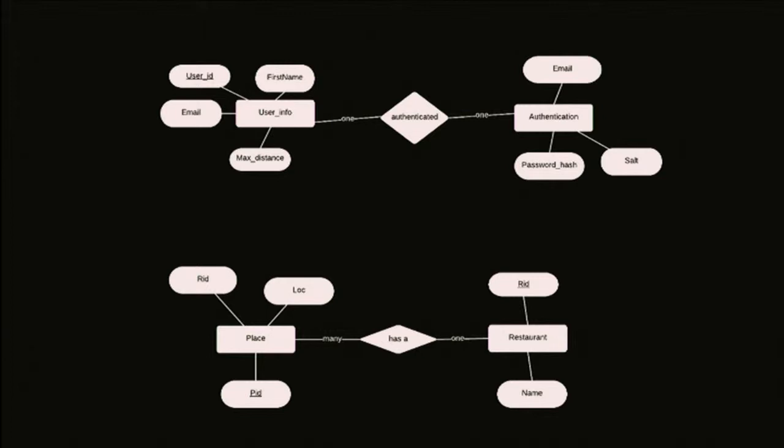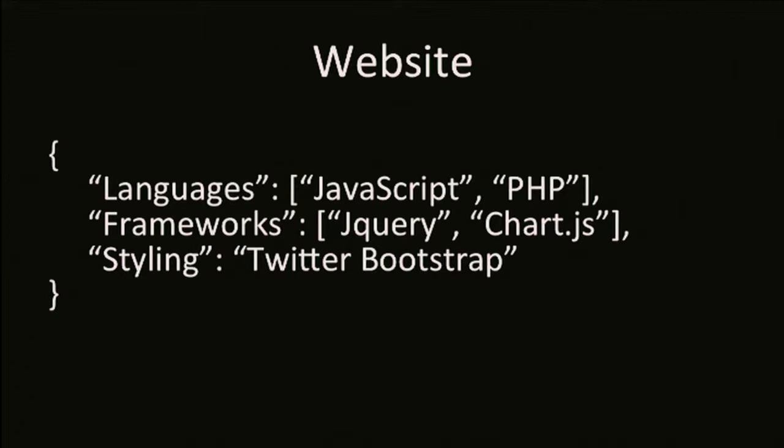The website is where we give analytical information to specific customers. For example, Chipotle wants information on just its store, not a Chipotle down the street or a different town away. Using that, we grab analytical information from the recommendation engine and, using chart.js, we represent that in a graphical visual. And using Twitter Bootstrap, we style it for a nice visual experience.